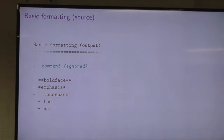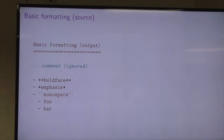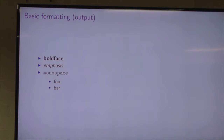The basic format: comments use a leading double period. Dot points use a dash, asterisk, or plus, and you can have multiple levels. Double asterisks are boldface, single asterisk is emphasis for italics, and three asterisks give you boldface and italics. Double backticks give you a monospace typeface. And what does this look like when it gets turned into a slide? Pretty much exactly what you'd expect — it's pretty straightforward.